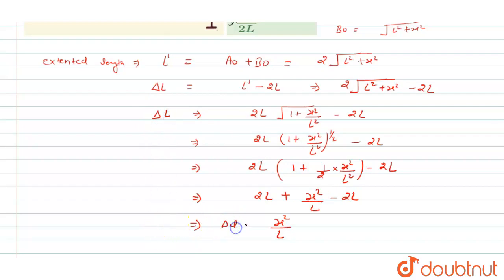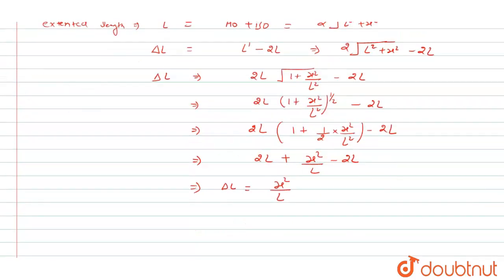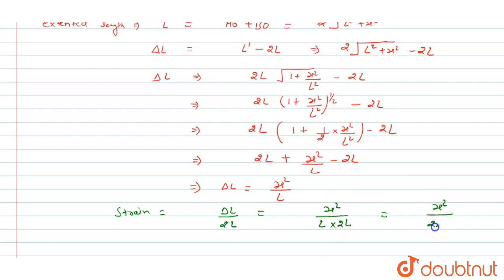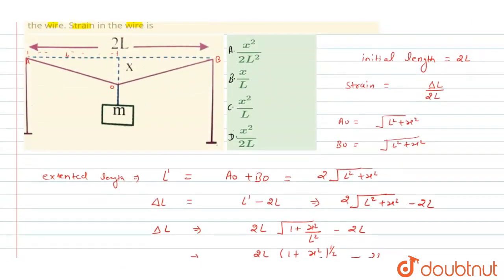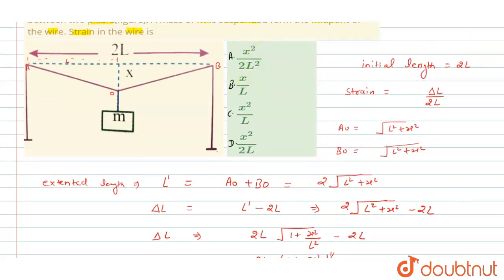Now we can calculate the strain. Strain = ΔL / initial length = (x²/L) / 2L = x²/(2L²). Checking the options, this matches option (a): x²/(2L²). So option A is the correct answer. I hope you understood the solution — thank you.